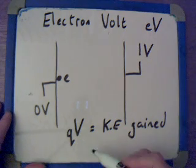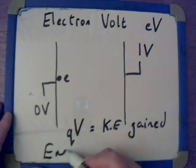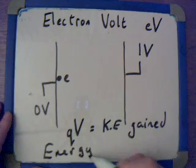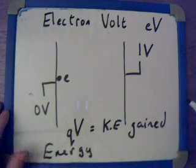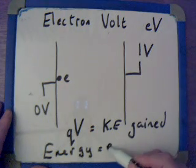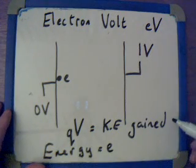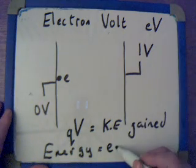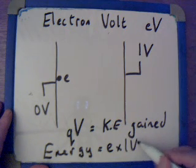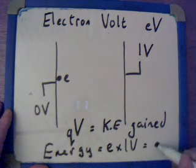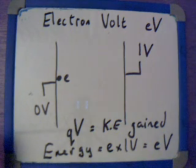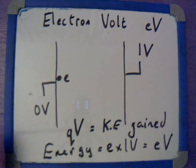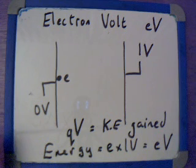In our case, the energy gained accelerating that electron across there is equal to the charge on the electron times the potential difference. The potential difference is just one volt. So it's E times one volt, which is equal to EV — the electron volt. So the electron volt can be defined as the energy required to accelerate an electron through a potential difference of one volt.